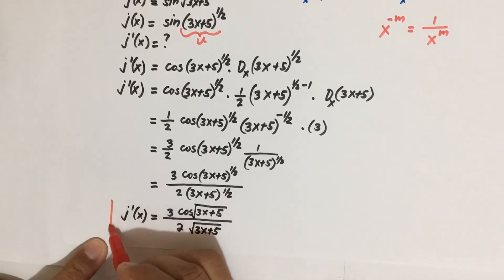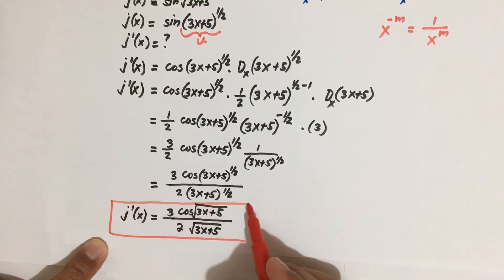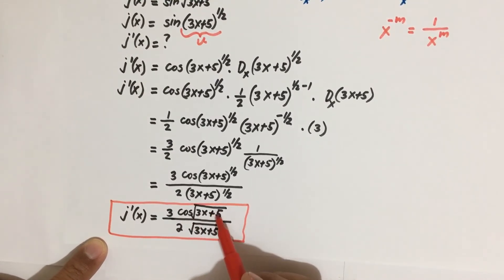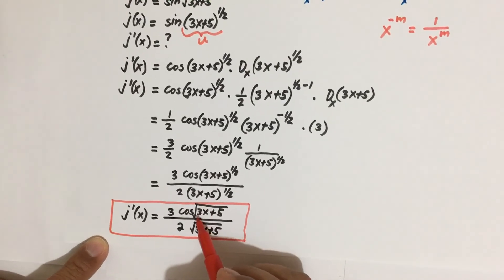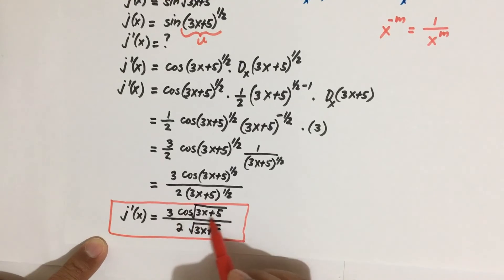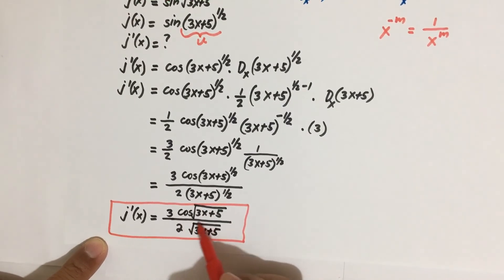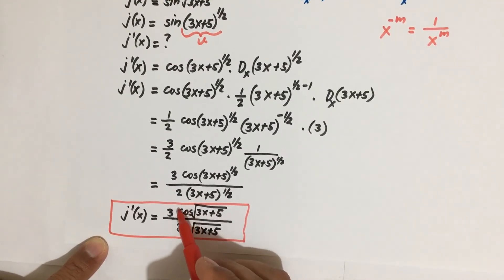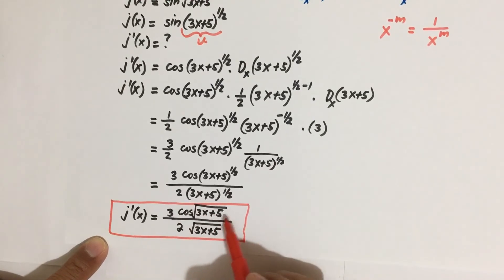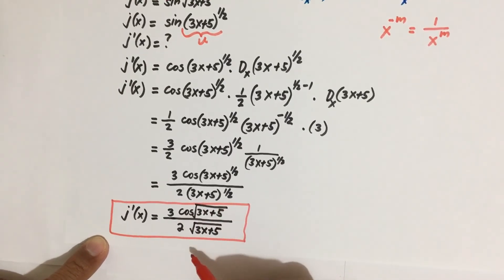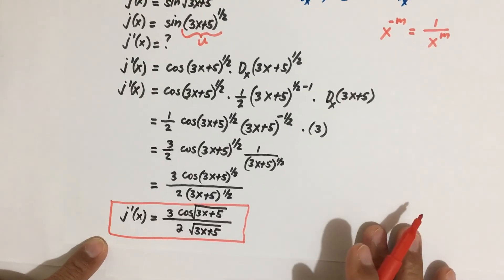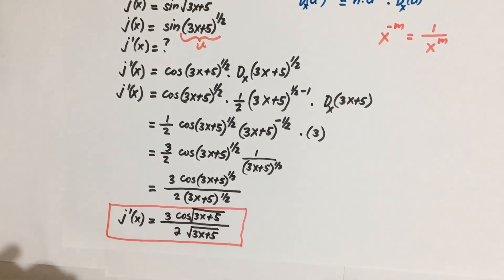Be careful — you are not allowed to cancel 3x plus 5 in the numerator with the square root of 3x plus 5 in the denominator, because the numerator expression is cosine of the square root of 3x plus 5 — the square root of 3x plus 5 is inside the cosine function. The denominator has only the square root of 3x plus 5 by itself, so you cannot divide them — that would be wrong.